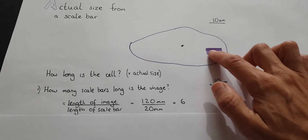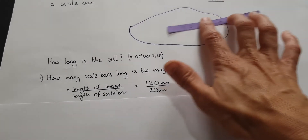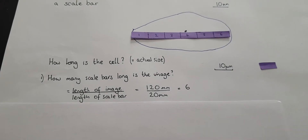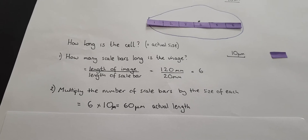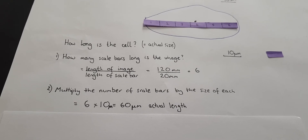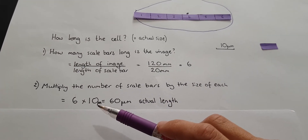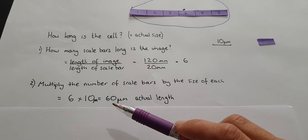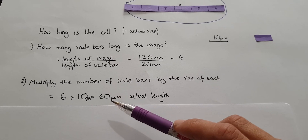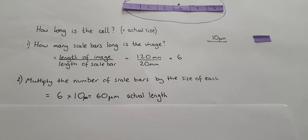You can do a little check: how many times does one scale bar fit into the image? You can see that it is six scale bars long. Then you multiply the number of scale bars by the size each scale bar represents. You've got six scale bars of 10 micrometers each, so six times 10 equals 60 micrometers of actual length. Remember, the units of the actual length are the same as the units written on the scale bar.